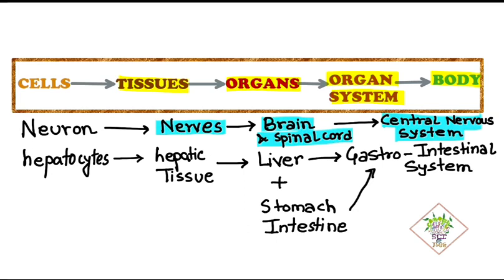Coming to a second example. Hepatocytes. These are the cells of liver. Hepatocytes join together to form hepatic tissue. These hepatic tissues combine to form a complete liver. Now liver together with the other organs like stomach and intestine forms the gastrointestinal system. This system helps in digestion of our food.